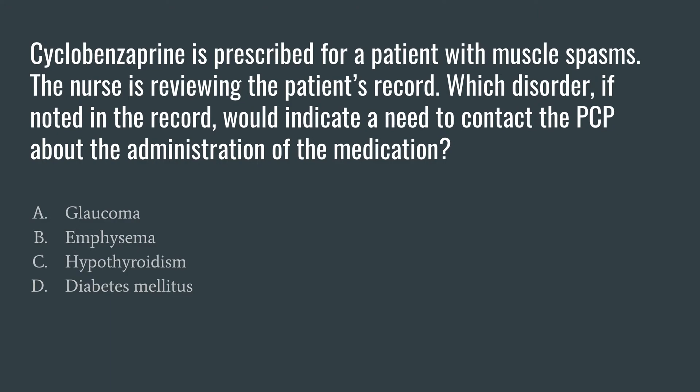Our question today is regarding a muscle relaxer, cyclobenzaprine or Flexeril. The question is: cyclobenzaprine is prescribed for a patient with muscle spasms. The nurse is reviewing the patient's record. Which disorder, if noted in the record, would indicate a need to contact the primary care provider about the administration of the medication?